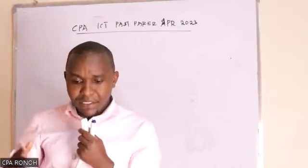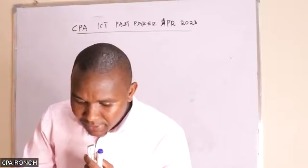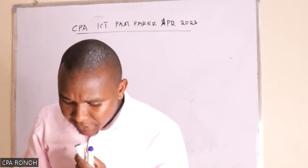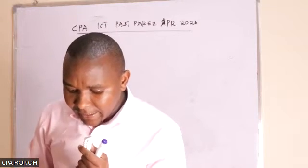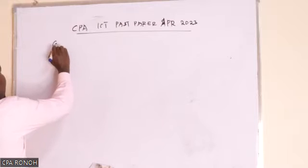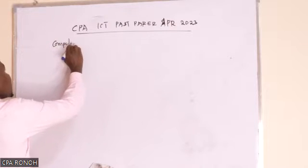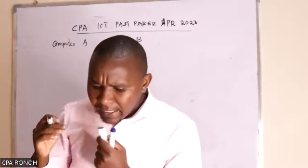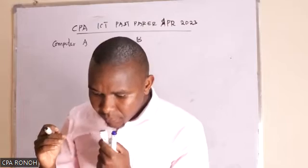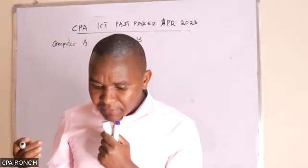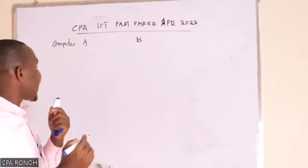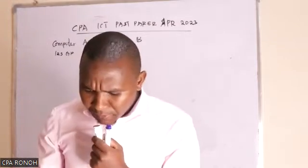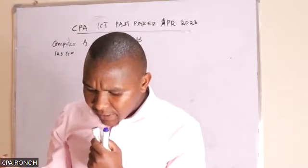Looking at the last sitting past paper, question one was an application question. It asked: Veronica and Simon each have a computer — Computer A and Computer B — with the following specifications. Computer A has a 185 GB flash disk.